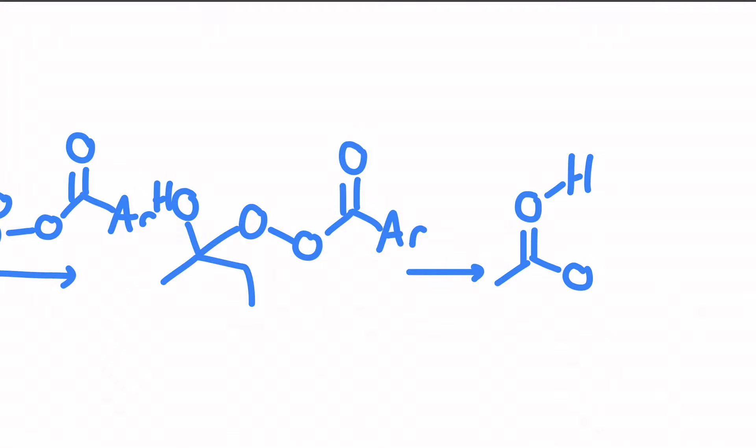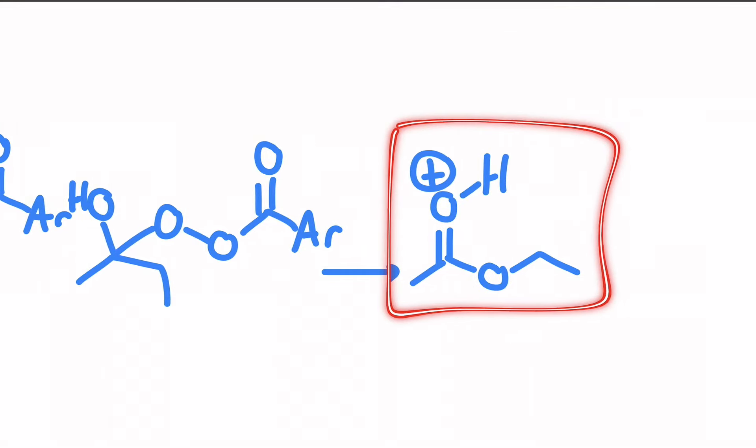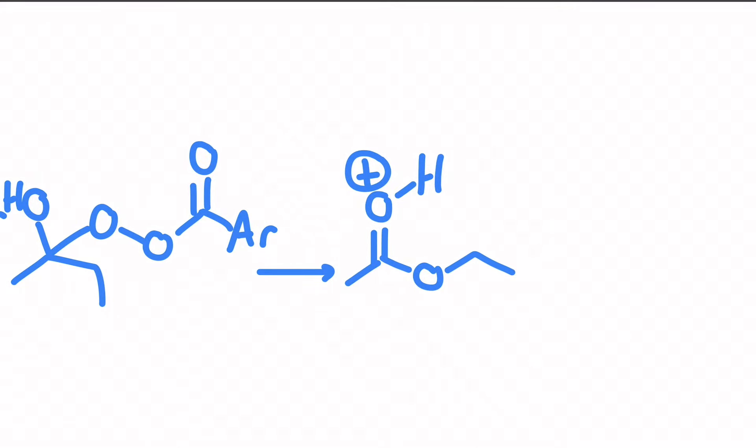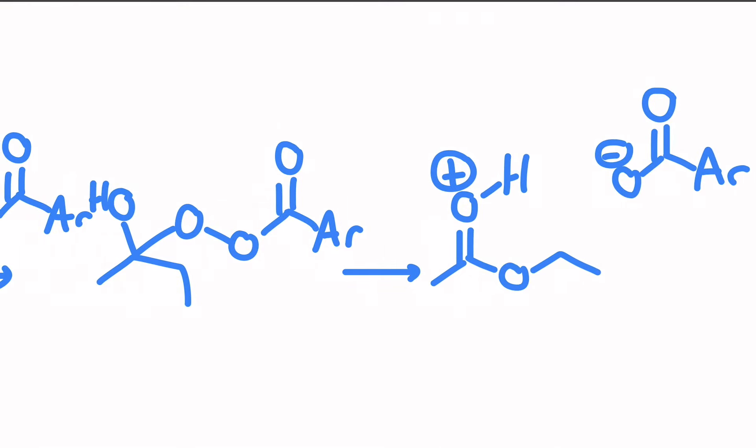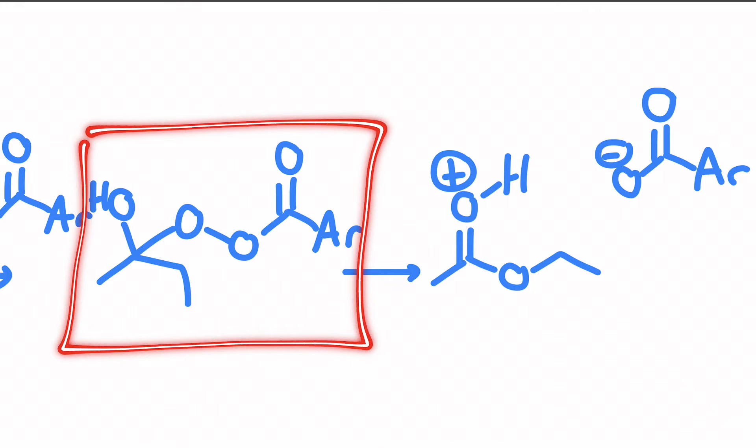Because then I want you to try and figure out the arrow pushing for how this intermediate becomes this precursor to the product. There is a byproduct and it's the carboxylate. So for practice I want you to hit pause and see if you can add curved arrows right on top of this intermediate to show how it breaks down into these two pieces.